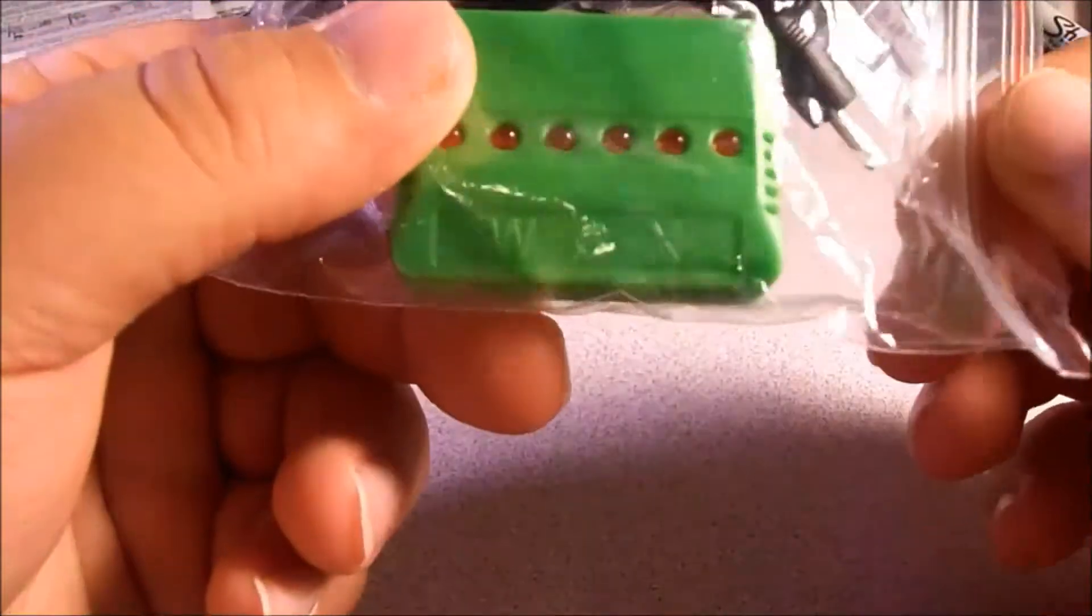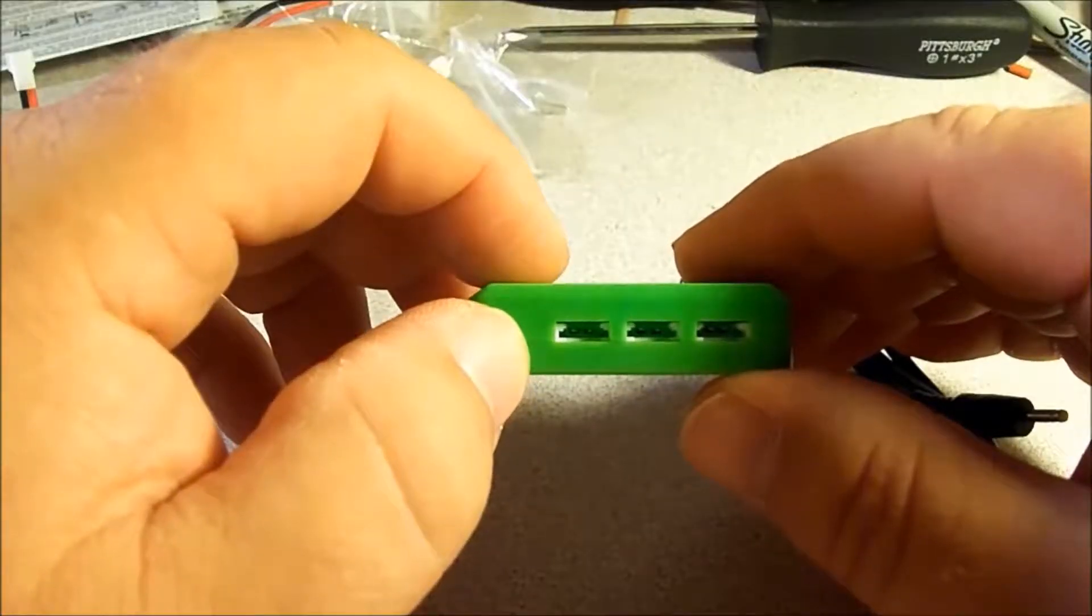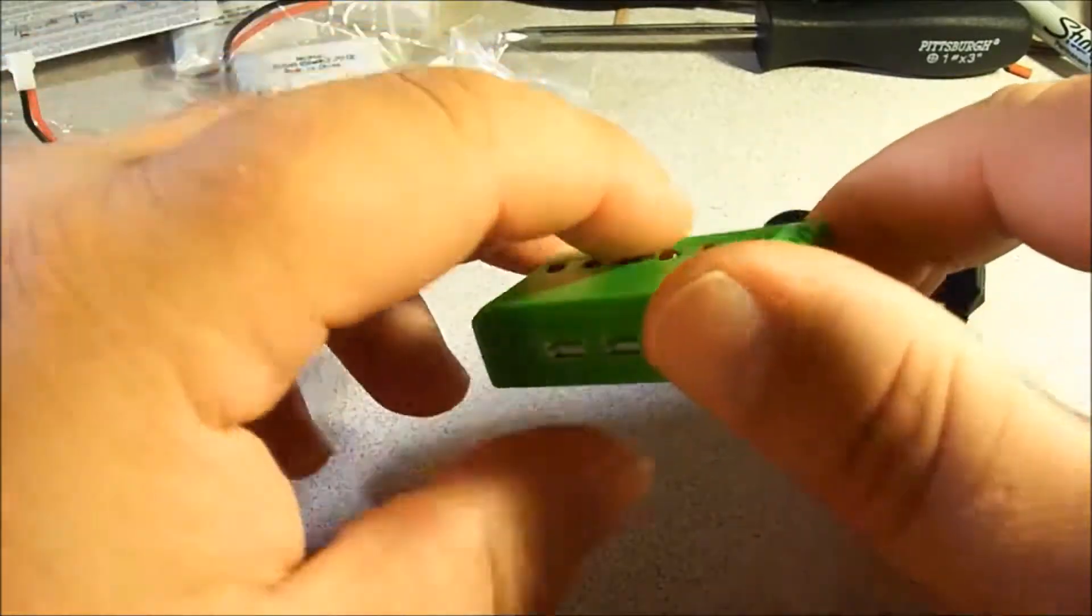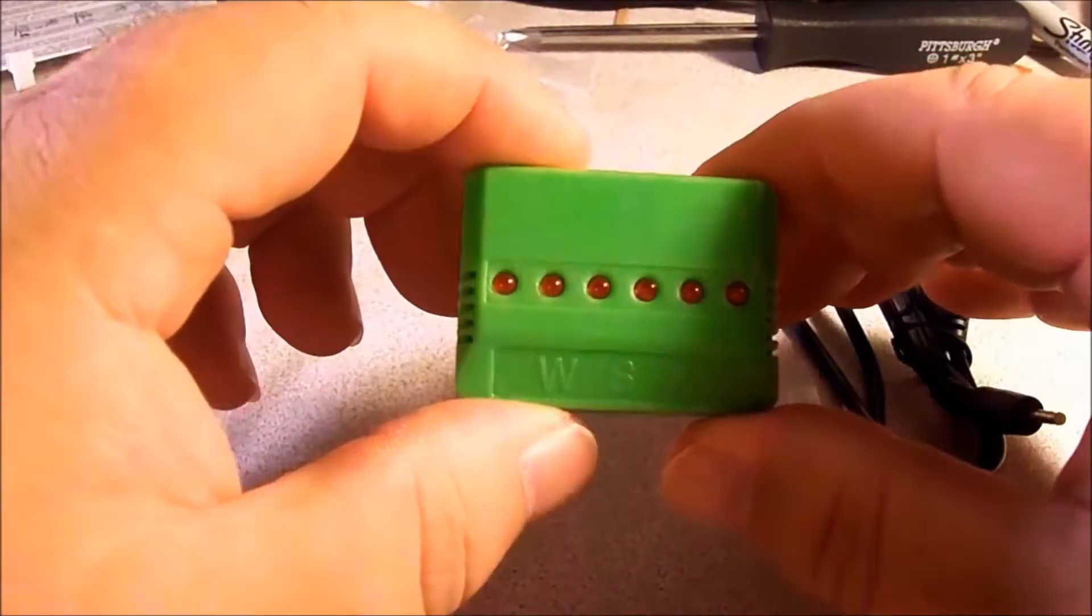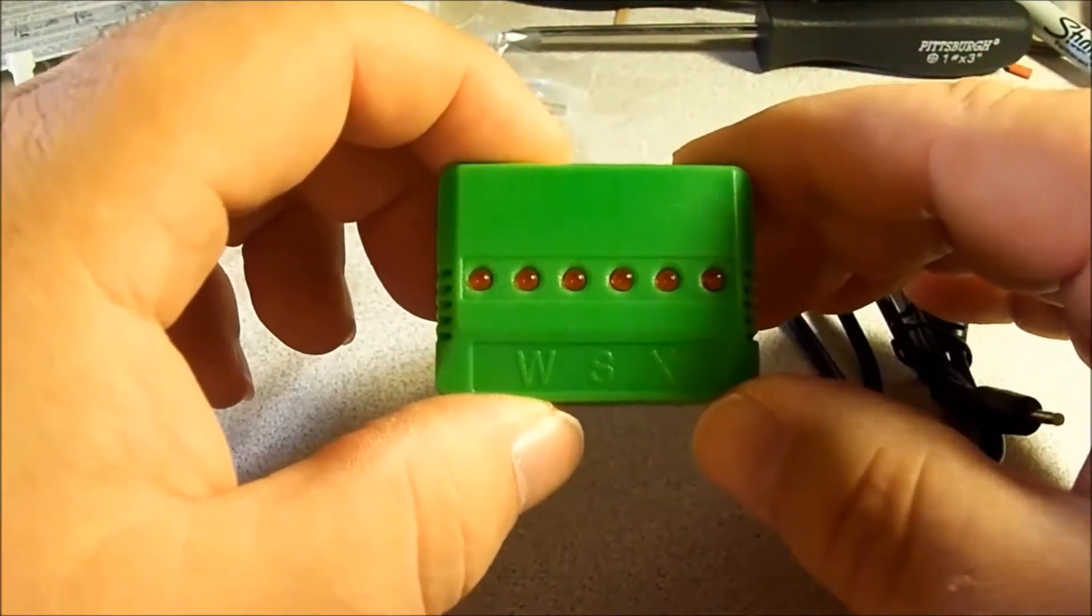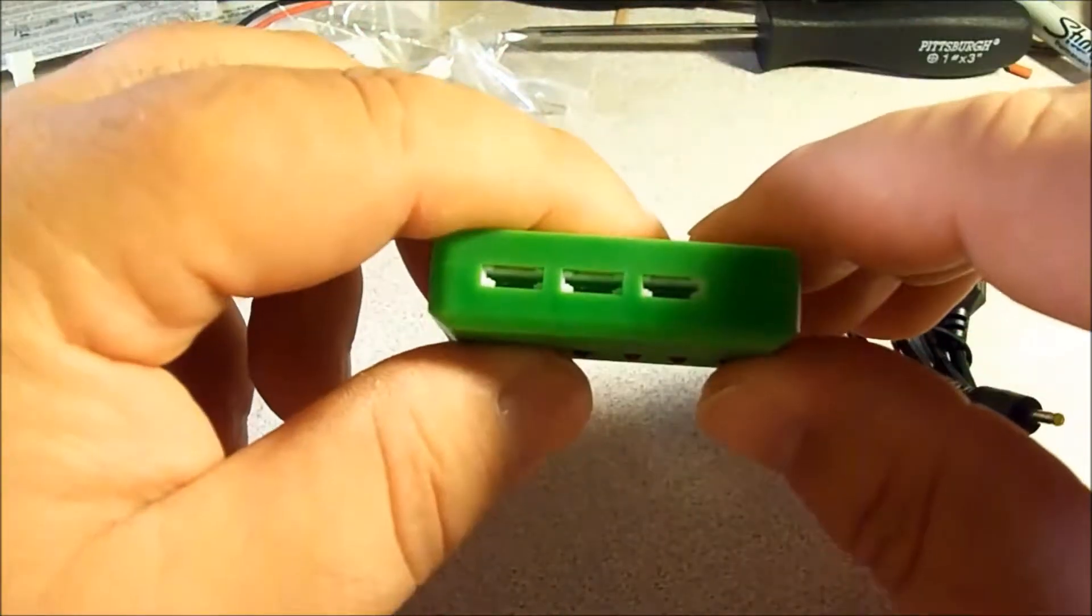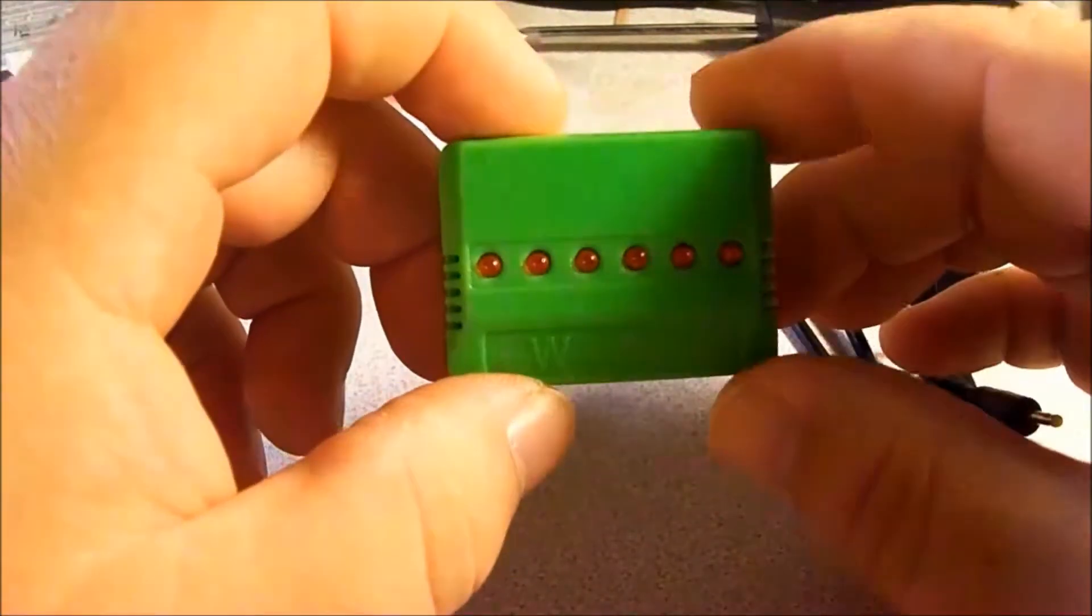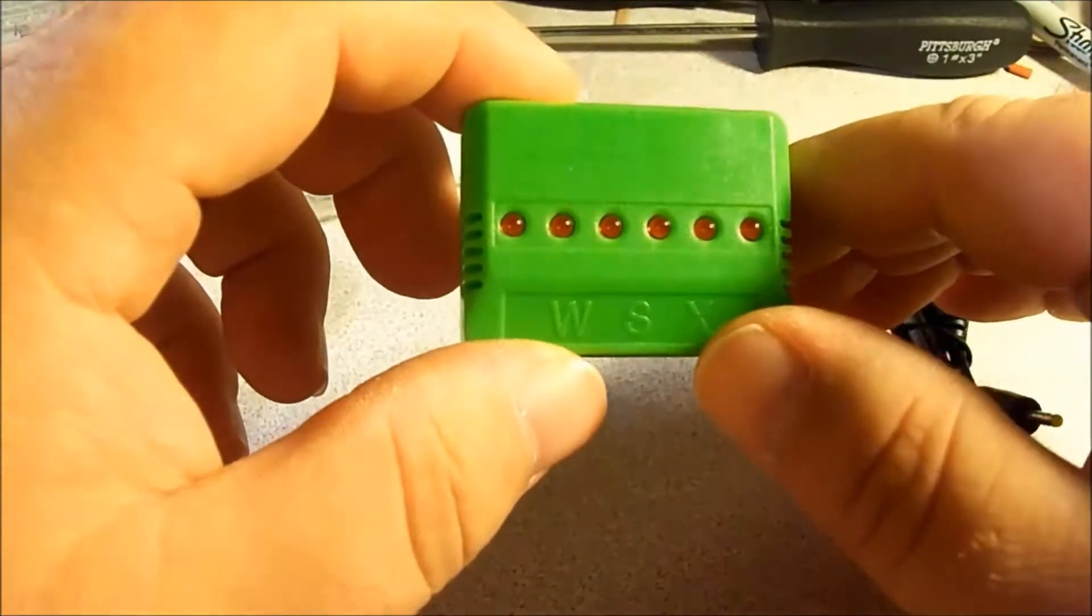This is the WSX branded X6 charger. Six charging ports, three on either side. And then it has six LEDs. Each one of these LEDs will light up once you plug a battery into the charging port. When the battery is done being charged, that light will go out.